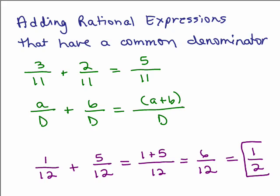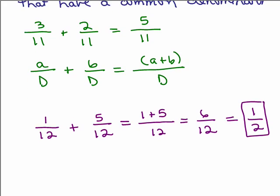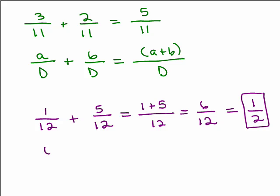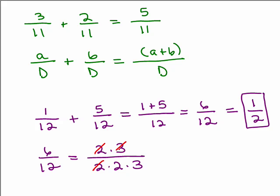At the end, you reduce — and one way of reducing is by factoring. For 6 twelfths, you can write 2 times 3 over 2 times 2 times 3 and cancel the common factors. Remember, there's always a 1 left in the numerator if everything cancels, so you get 1 over 2, another way to get 1 half.